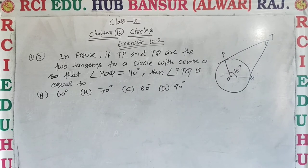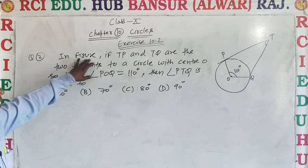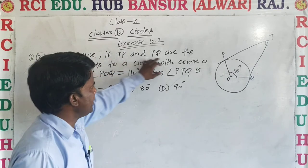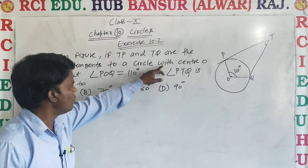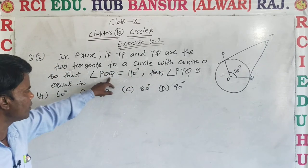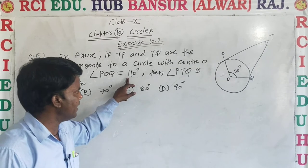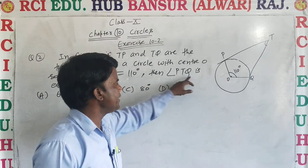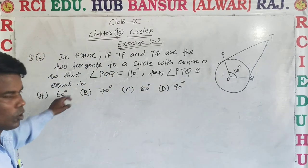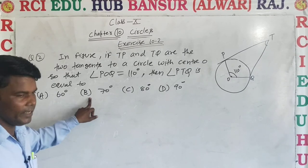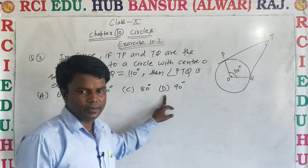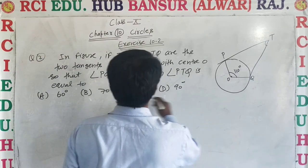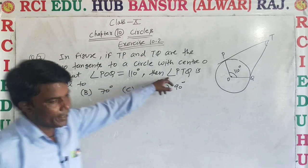Now exercise 10.2, question number 2. In the figure, if TP and TQ are two tangents to a circle with center O, such that angle POQ equals 110 degrees, then find angle PTQ. Options: A: 60°, B: 70°, C: 80°, D: 90°.